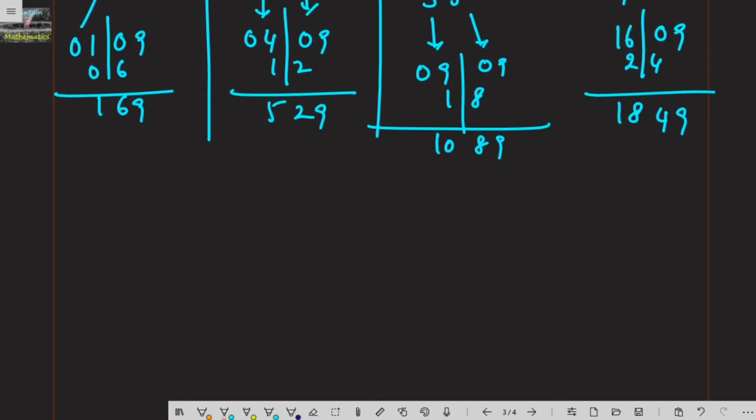Next, 53 square: 5 square is 25, 3 square is 09, and 5 times 6 is 30. So the answer is 2,809.